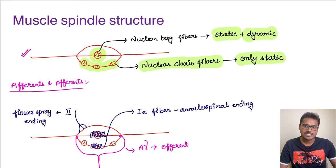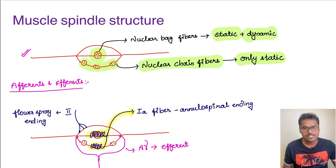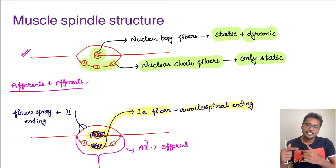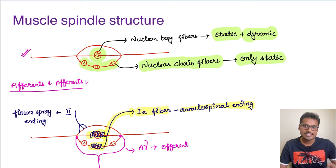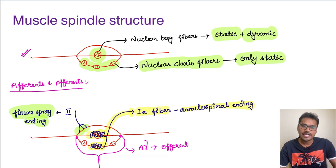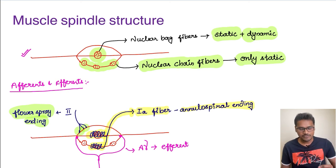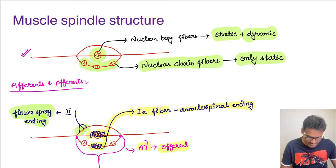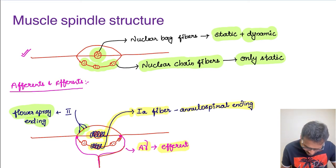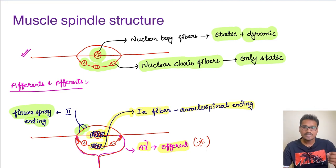Coming to the afferents and efferents from the muscle spindle — one important afferent from both nuclear bag and nuclear chain fibers is the 1A fiber, also called annulospiral ending because they spiral around the nuclear bag and chain fibers. This is the most important afferent from the muscle spindle. There is also a flower spray ending, called type 2 fibers, which carry signals only from the nuclear chain fibers. The efferent to the muscle spindle is the A gamma fiber, which innervates the ends of the muscle spindle. The A gamma fiber is also very important for a maneuver called the Jendrassik maneuver.